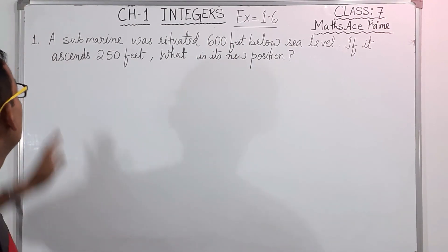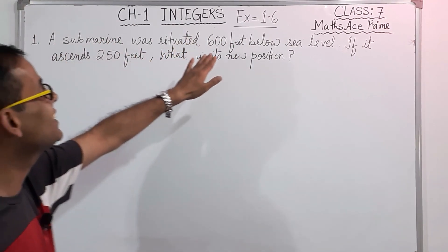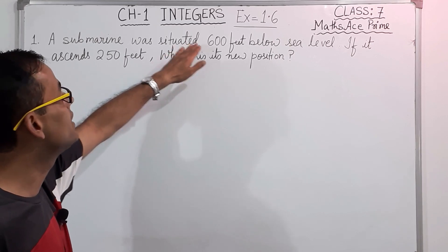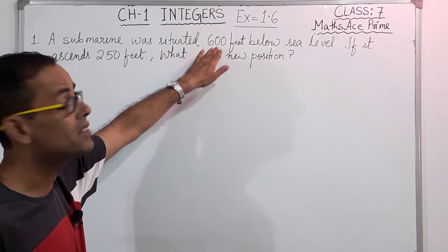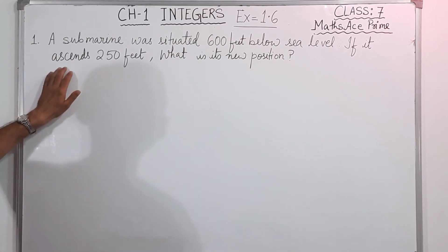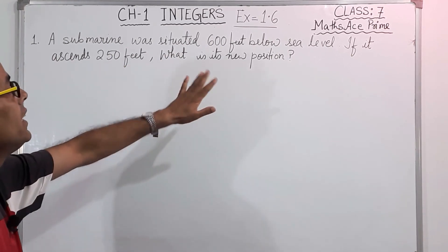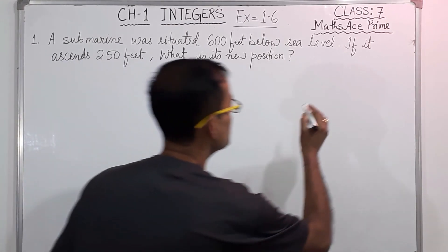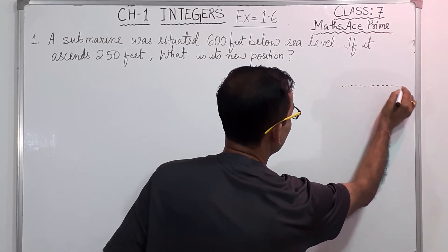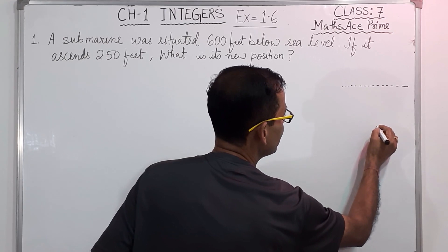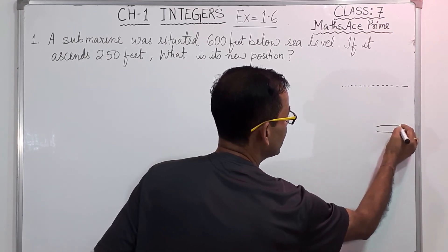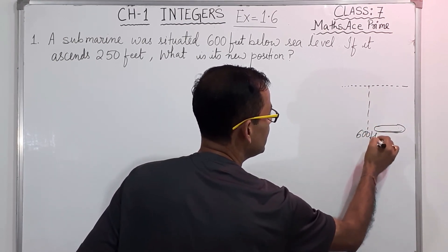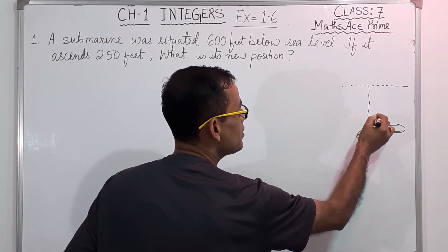So the first question they are telling, a submarine was situated 600 feet below sea level. So under the sea a submarine is there and it is situated how much feet below? 600 feet below. If it ascends 250 feet what is its new position. So you have to find the new position. So suppose this is the sea level.